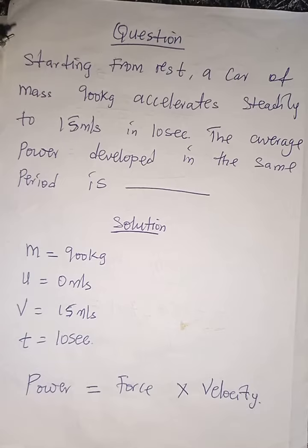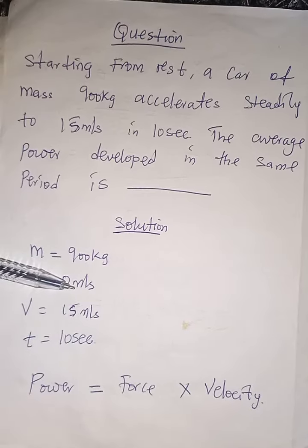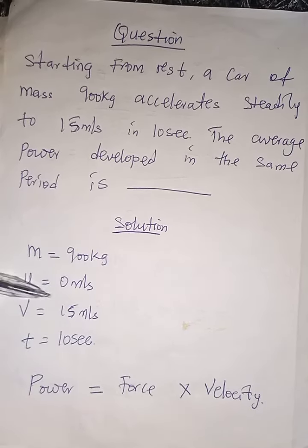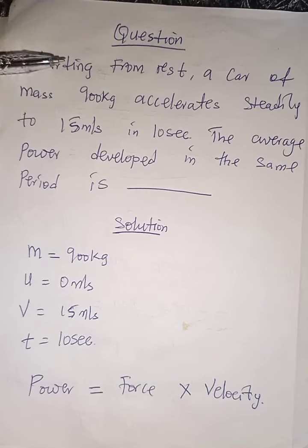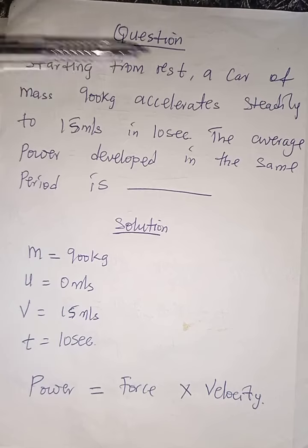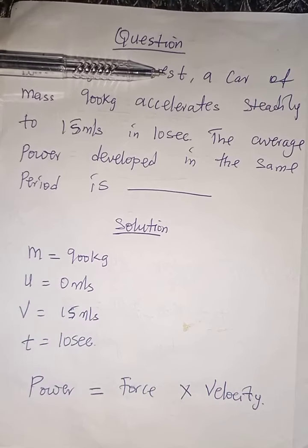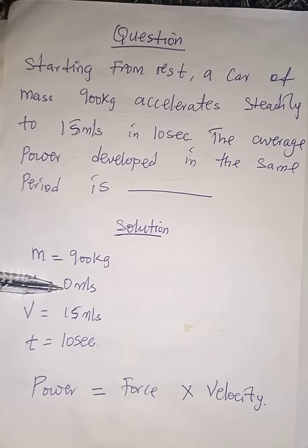In physics, if a body starts from rest, we call the initial velocity zero — that is the meaning of 'starting from rest.' The body then accelerates to another velocity, which we call the final velocity, which is equal to 15 meters per second.